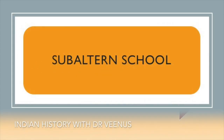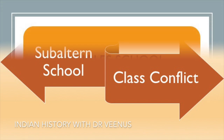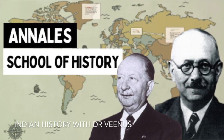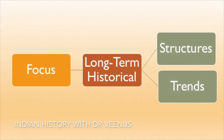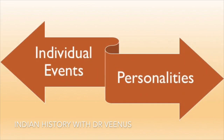Subaltern school: The Subaltern school deals with caste conflict. Annals school: Originating in France in the early 20th century, the Annals school focuses on long-term historical structures and trends rather than individual events or personalities.